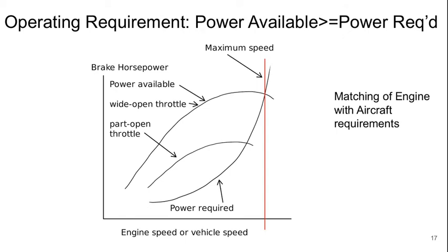For one of these engines to operate and maintain a flight condition, the power available from the engine-propeller combination must be greater than or equal to the power required. Looking at a schematic illustration of this, the concave-down curves represent power available — the upper one at wide open throttle, the lower at partially open throttle — which increase with engine speed but eventually drop off as friction and other losses rise faster than work output. The concave-up curve is the power required to maintain a given flight condition, and where the wide open throttle curve intersects it gives the maximum possible aircraft speed.